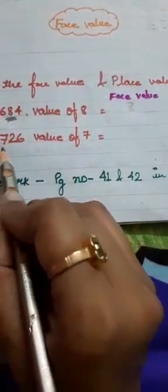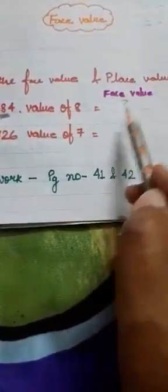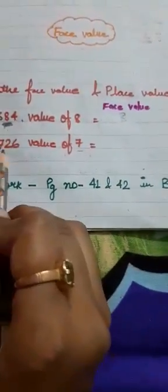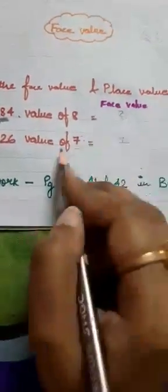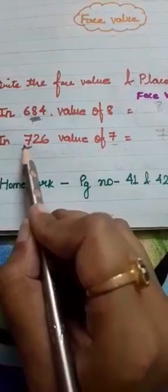In the same way, in seven hundred twenty-six, find the value of seven. First we write the face value of seven — the digit itself — so that is seven. Now for the place value of seven, looking at ones, tens, and hundreds, seven is in the hundreds place, so we write seven hundred.